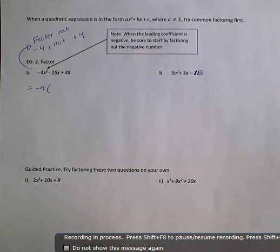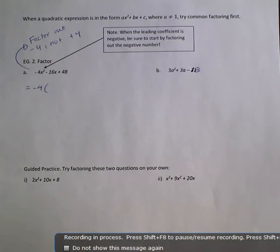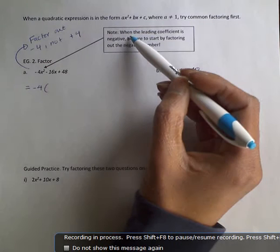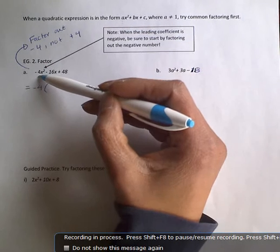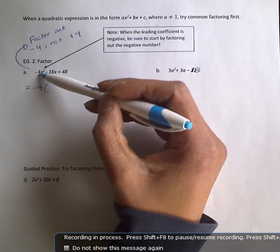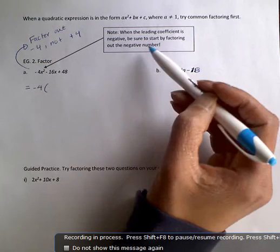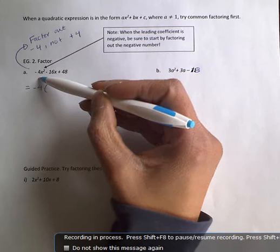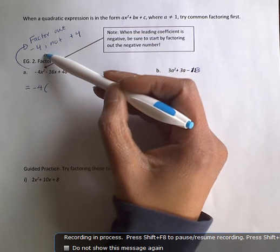So today when a does not equal 1, we're going to try common factoring first. Note, when the leading coefficient is negative, like in this question here, the leading coefficient is the first number in front of that first variable, make sure you start by factoring out the negative number first. So I want you to factor out the negative 4, not positive 4.